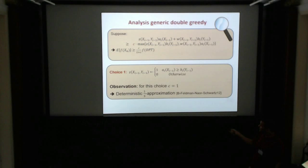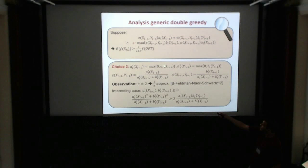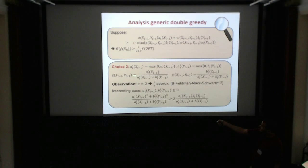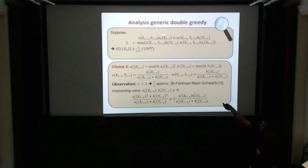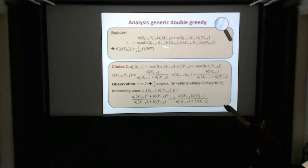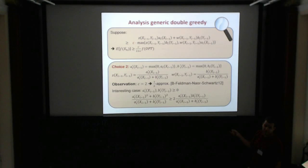One obvious deterministic solution is choosing z = 1 if a_i > b_i, which easily gives c = 1 and a one-third approximation. But there is a better randomized choice: set z = a_i/(a_i + b_i) and w = b_i/(a_i + b_i). Then the profit is a_i²/(a_i+b_i) + b_i²/(a_i+b_i), and the loss terms are both a_i·b_i/(a_i+b_i). Since a_i² + b_i² ≥ 2·a_i·b_i, this gives c = 2, yielding a half-approximation.